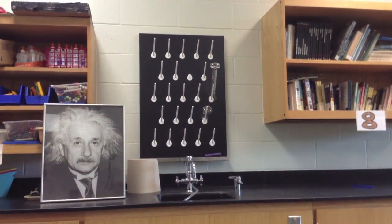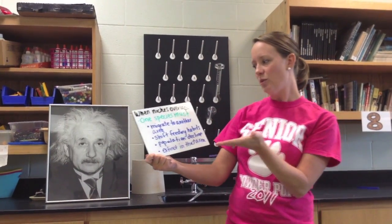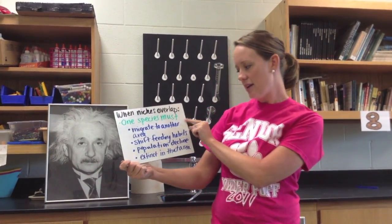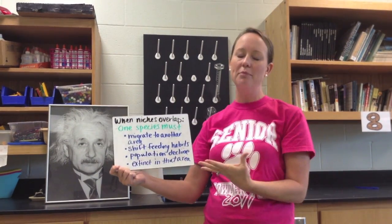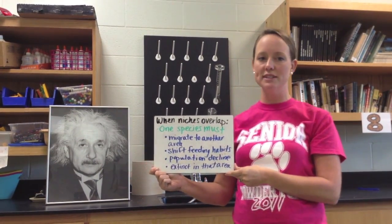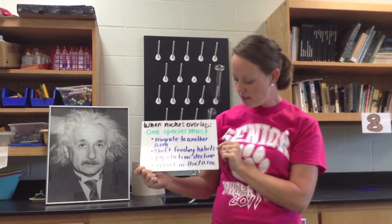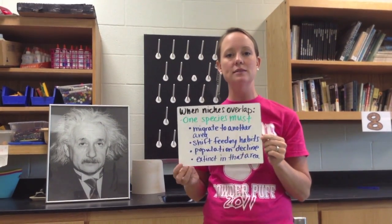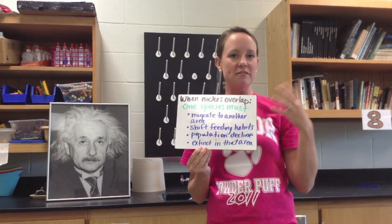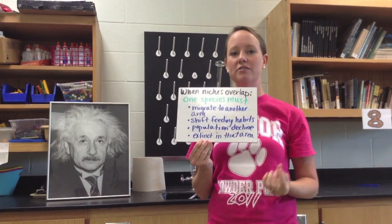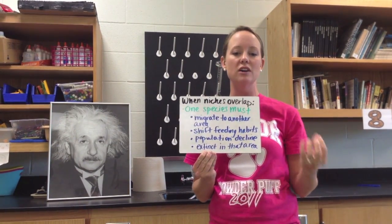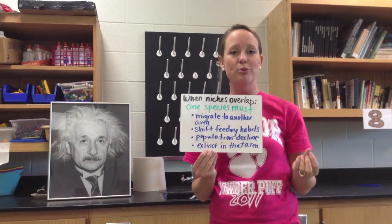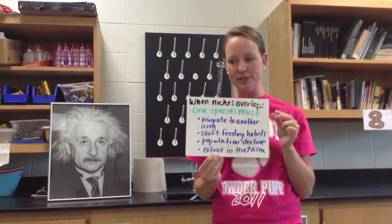So what happens when two niches overlap? Either one species is going to have to move away, they will shift their feeding habits, or they'll see their population decline and possibly become extinct. One example of shifting feeding habits: we have organisms that feed during the day, and then nocturnal organisms that feed during the night. So two species that feed on the same type of prey can survive in the same ecosystem.